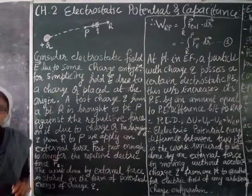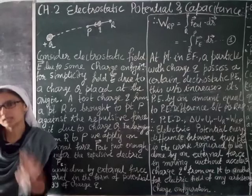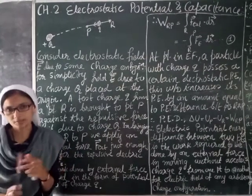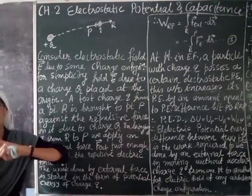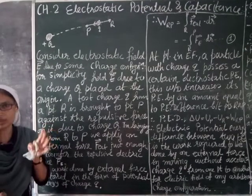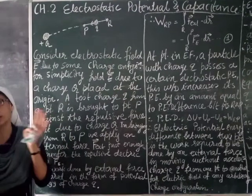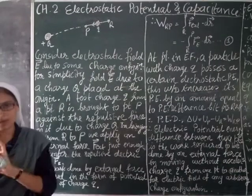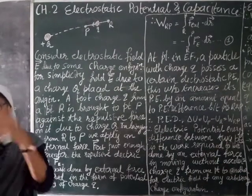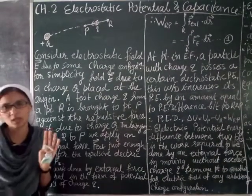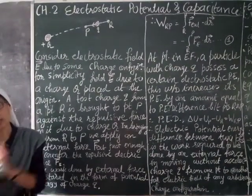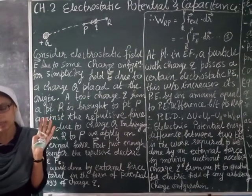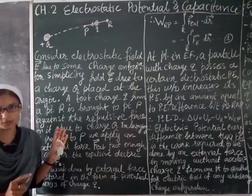Electrostatic force, like gravitational force, is conservative. When you say conservative force, that means when you talk about the path, it will not have any difference — it will be independent of the path. So when you are talking about potential energy in the electrostatic field, it will depend on the initial position and the final position.